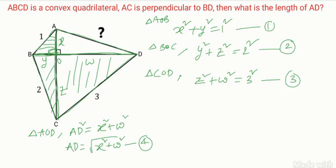So for finding AD, you require X square plus W square. Consider equations 1, 2, 3. So I want X square plus W square, so I can do like this: 1 minus 2 plus 3. Equation 1, equation 2, equation 3. What I did, 1 minus 2 plus 3.